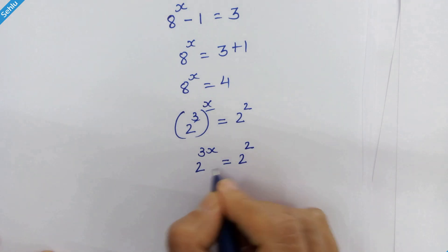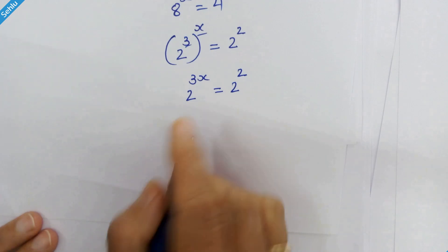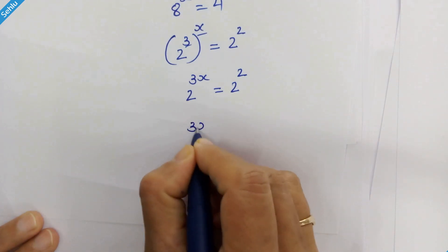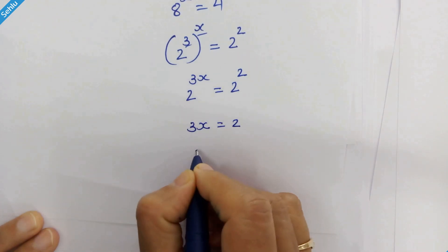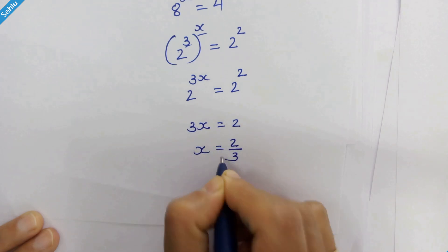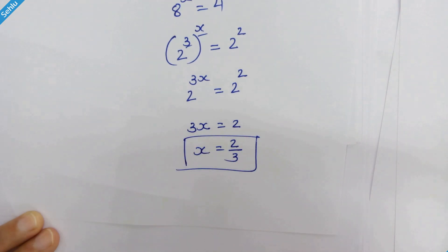It's the same base at both the sides, so we can equate their exponent. So 3x is equal to 2. So x is equal to 2 upon 3 is our answer.